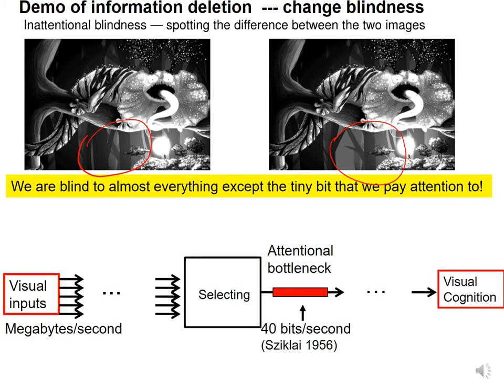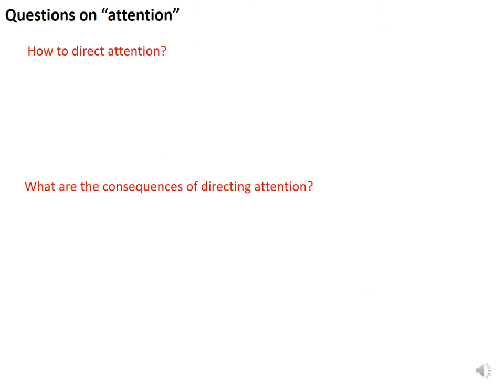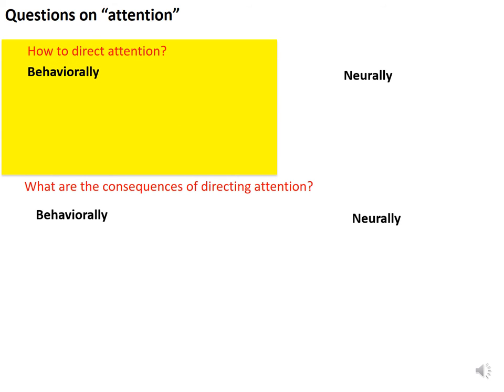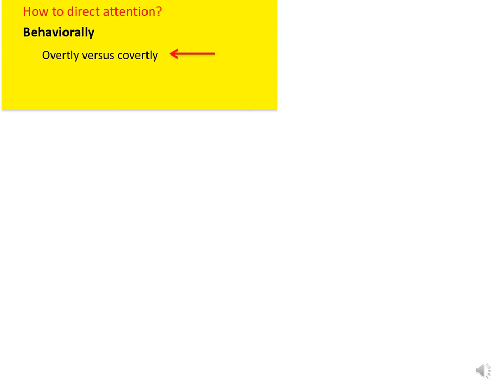We have a flow diagram of visual information. The questions we can ask to study attention are: how to direct attention, and what are the consequences. Each question has behavioral and neural aspects. We start with how attention is directed behaviorally. In terms of eye movements, attention can be directed overtly by moving our gaze to where we select visual inputs, or covertly by selecting from the corner of our eyes.